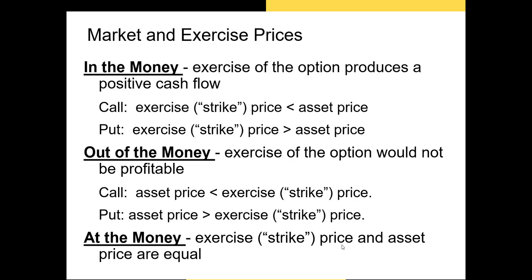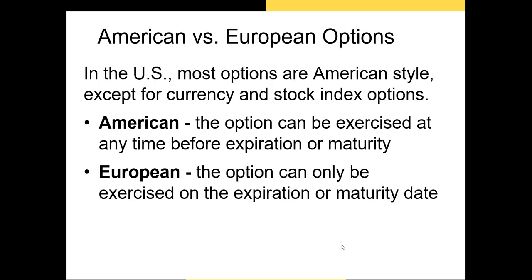Out of the money options are options that, if exercised, will lead to a loss. Call options with a strike price above the current asset price would lead to a negative payoff, so you'd never exercise them. Puts whose underlying asset price is above the strike price are also out of the money. Finally, at the money options have a strike price equal to the underlying asset price — there's no difference in payoff between exercising and not exercising.